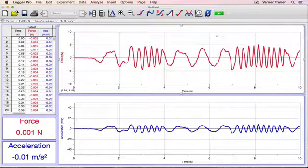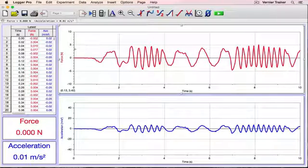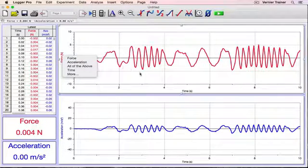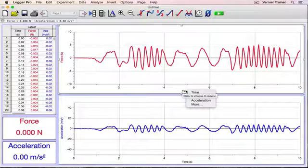I can choose what is plotted on each axis by clicking on the axis title. I'll change the horizontal axis to plot acceleration.